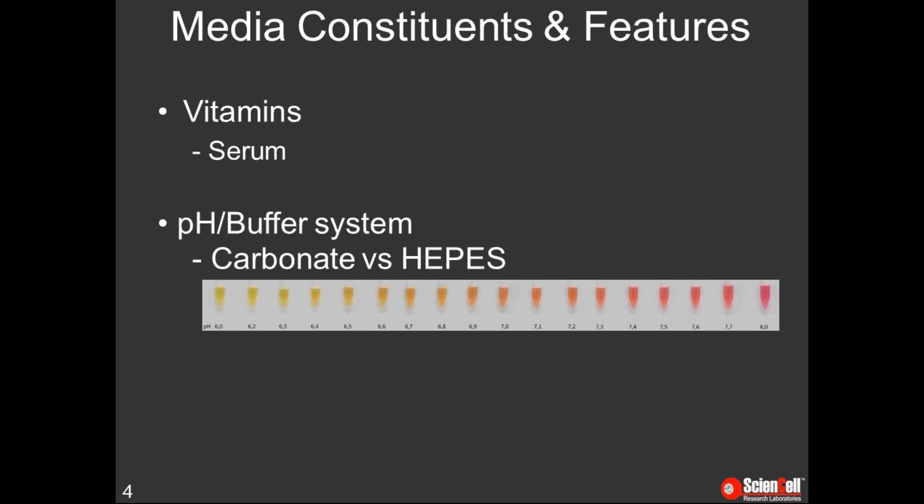A really important component of media is the buffering system, which keeps the media at a consistent pH, generally between 7.2 and 7.4, for primary cells. As cells grow and proliferate, the media progressively becomes more acidic — the cells consume nutrients and produce metabolites. Primary cells are particularly sensitive to changes in pH. If you're using medium with phenol red, you'll see this as the color changes from light pink to yellow over time. It's important to pay attention to this color change, as you'll want to change the medium before it becomes yellow. At ScienCell we recommend changing the media on primary cells every two to three days, but more frequently as cells become more dense.